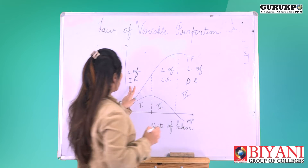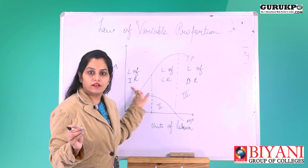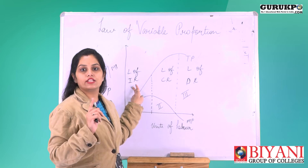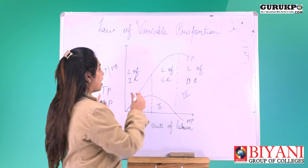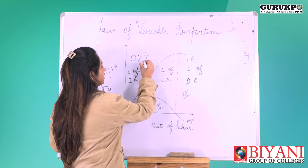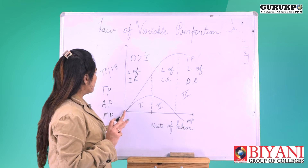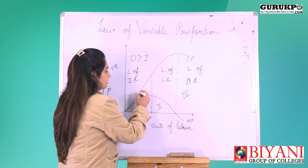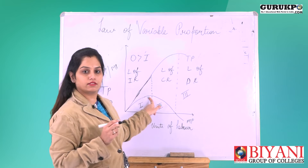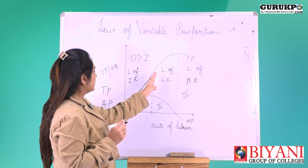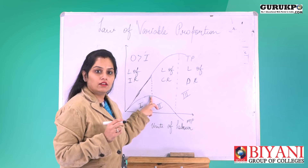In stage one, the law of increasing returns to factor, we keep some factors fixed and the rest variable. When the change in output is more than the change in input, this is the law of increasing returns to factor. In this stage, TP increases at an increasing rate, and MP also increases. This stage comes to an end when MP reaches its maximum.